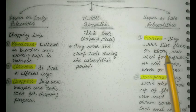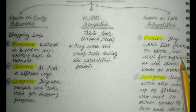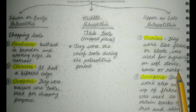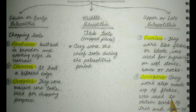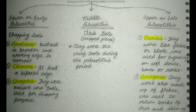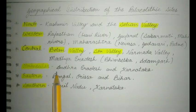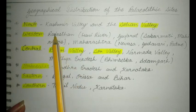Third is upper or late Paleolithic. First, brains - they were like flakes or blades used for engraving on soft stones, bones or rocks. Scrapers were also made of flakes and used to obtain barks of trees and skins of animals.